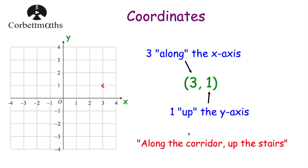Some people remember this by saying 'along the corridor, up the stairs', because the first number tells us how far along the x-axis to go — along the corridor — and then the second number tells us how far up the stairs to go. If it's positive, you go up, and if it's negative, you go down. That's the saying: along the corridor and up the stairs.